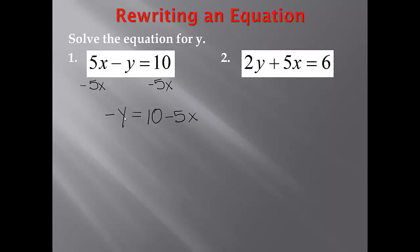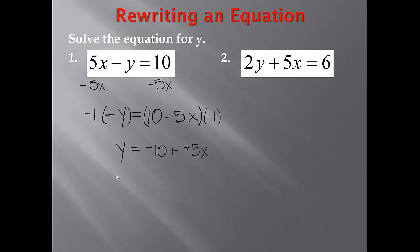We have negative y and we want just y. So we can either multiply both sides by negative 1 or divide both sides by negative 1 — it doesn't matter. Let's go ahead and multiply both sides by negative 1. Negative 1 times negative y: a negative times a negative is a positive, so we get y. On the right-hand side, negative 1 times 10 is negative 10, and then we have minus negative 1 times 5x, which is negative 5x. When we subtract a negative, it's the same as adding a positive. So we have y equals negative 10 plus 5x.